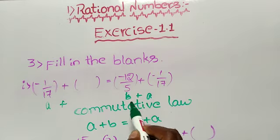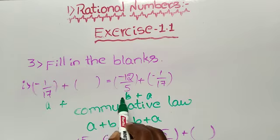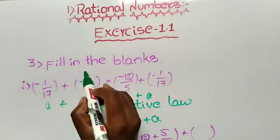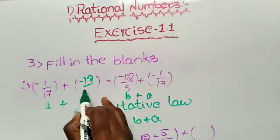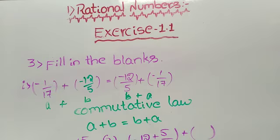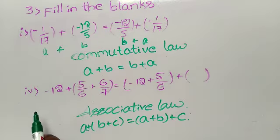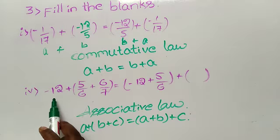Which is the missing element here? b. What is the b value here? -12/5. This is the answer of the first blank. Now we will discuss the fourth problem: -12 + 5/6 + 6/7 = -12 + (5/6 + ?).